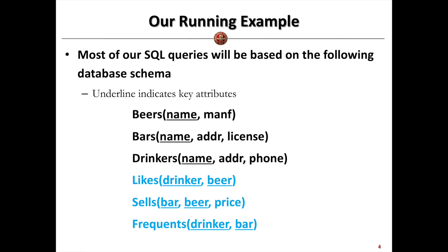Based on the knowledge we learned before, we can translate this ER diagram into six relations. For the entities beers, bars, and drinkers, we create: a relation Beers with name and manufacturer (name is the key); Bars with name, address, and license (name is the key); and Drinkers with name, address, and phone number (name is the key). These underlined attributes denote the keys for the relations.